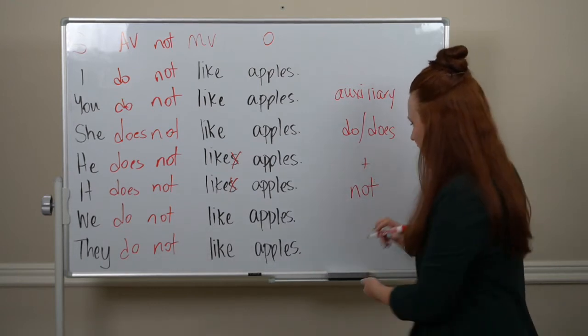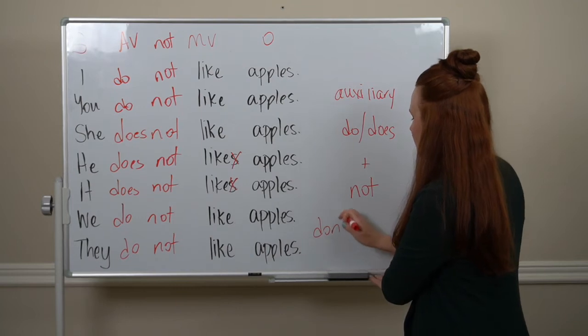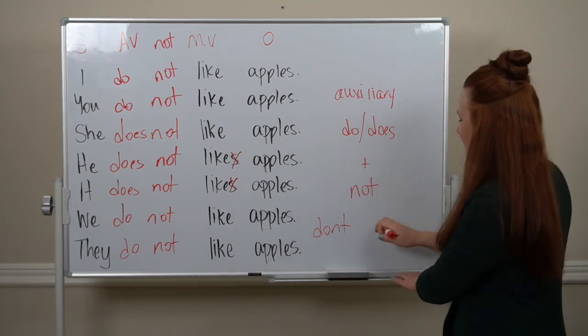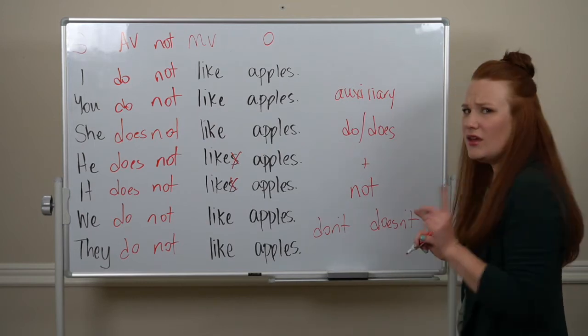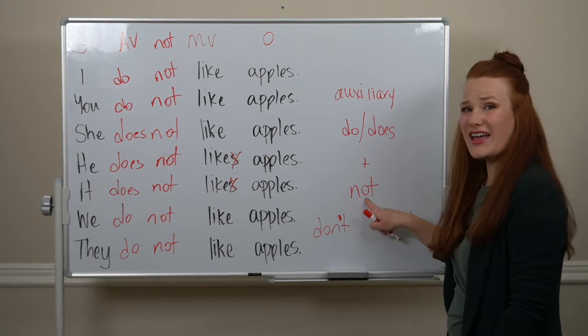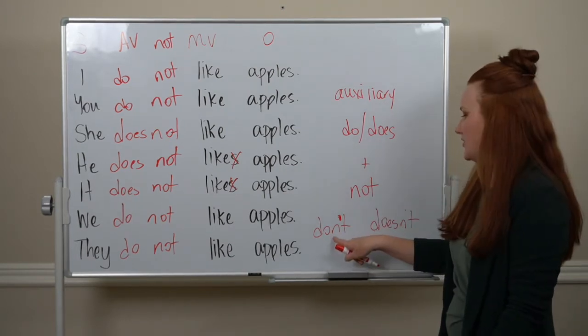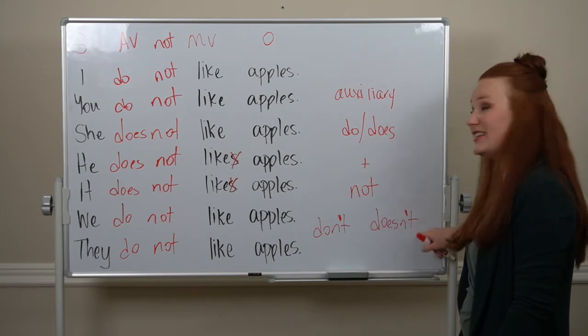With 'do' and 'does not', 'do not' becomes 'don't' and 'does not' becomes 'doesn't'. Note here that the apostrophe is where we took that O out of the word. So, don't apostrophe T, doesn't apostrophe T.